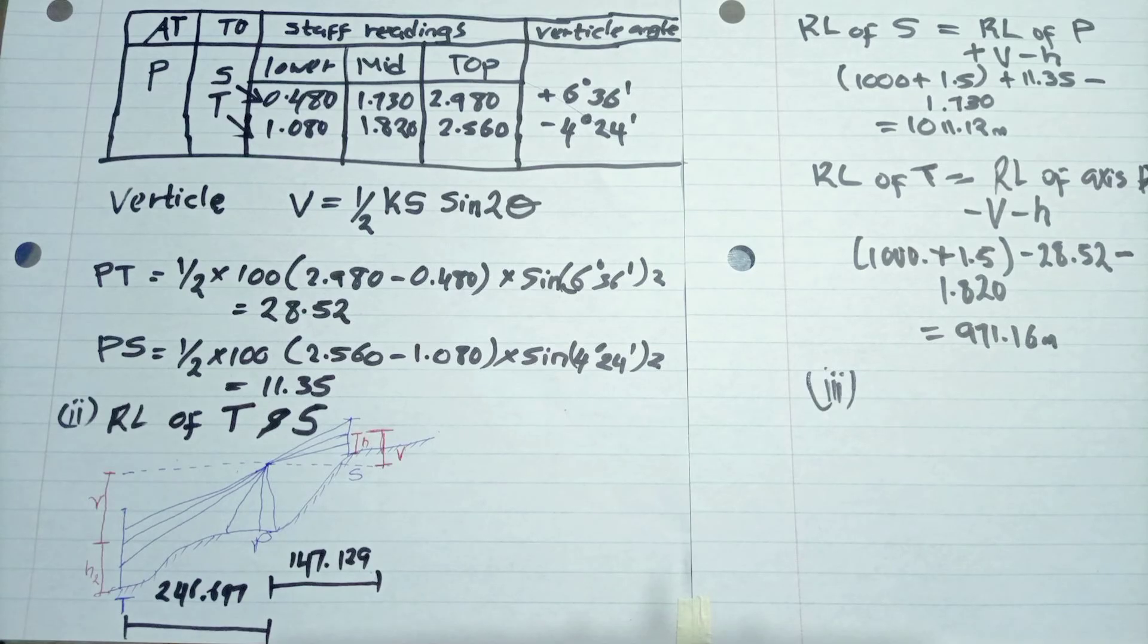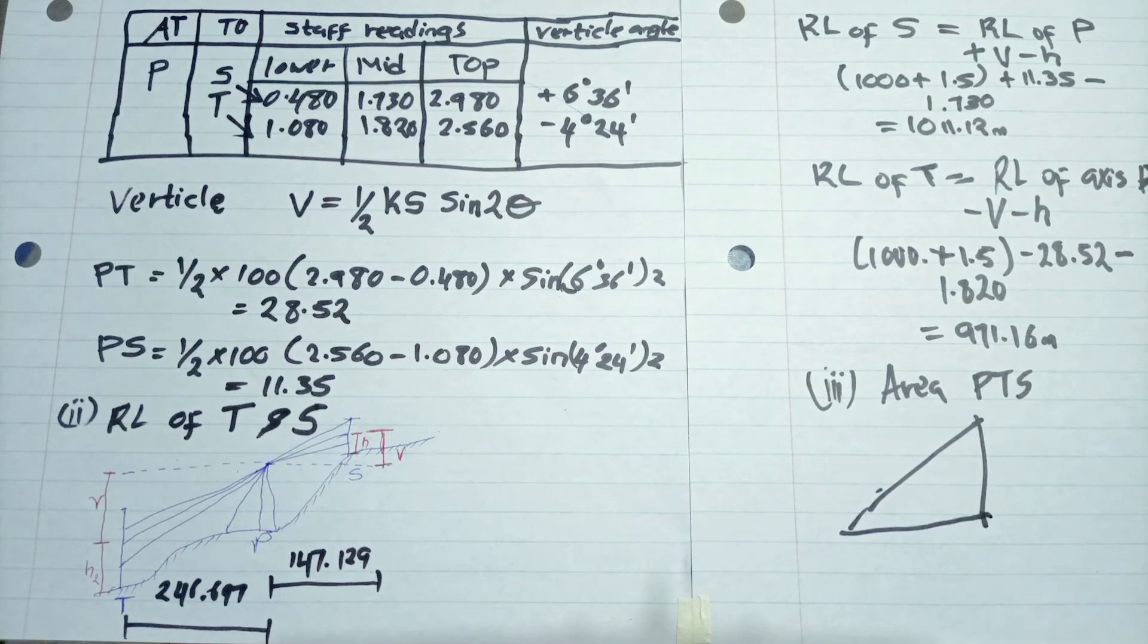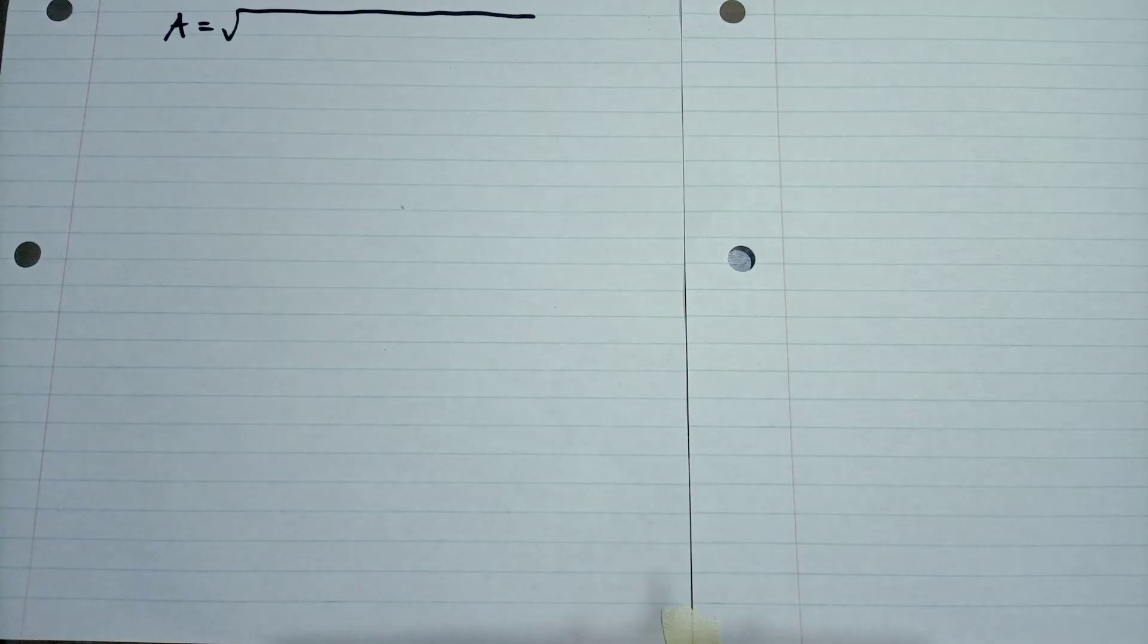And then we go to find the area of triangle PTS. So by having that diagram, we sketch where we find our values for T, P, and S, and having all our sides given. So by calculation, those are the horizontal distances which we have.